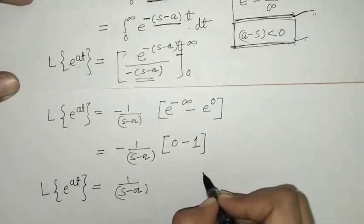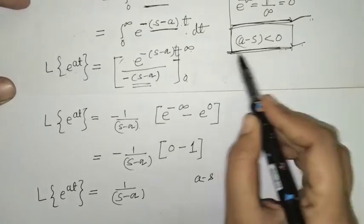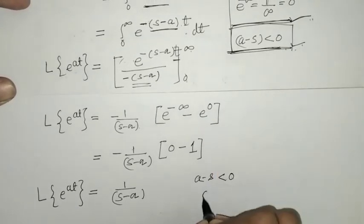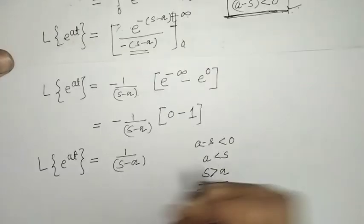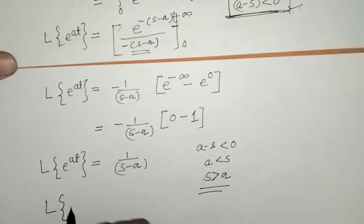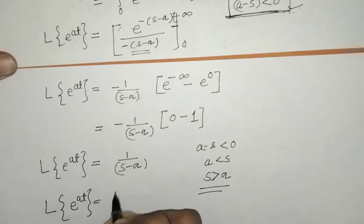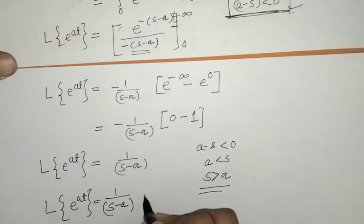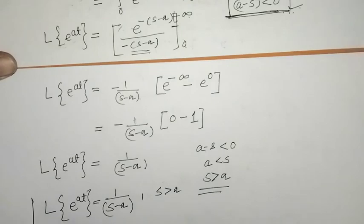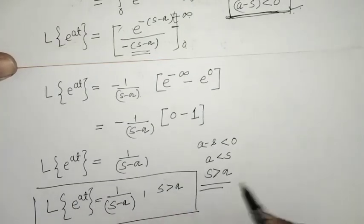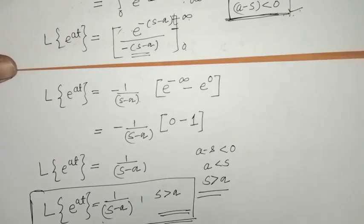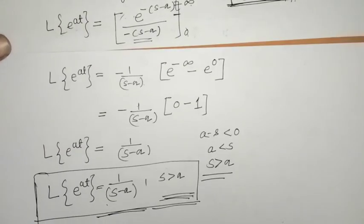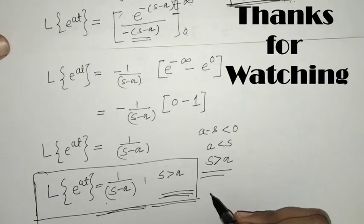So the Laplace of e^(at) is one over (s minus a), with the condition that a minus s is less than zero, meaning a is less than s, that is s is greater than a. This is the required result. The Laplace transform is defined under this condition. That's it for now, see you in the next video, thank you, keep watching.